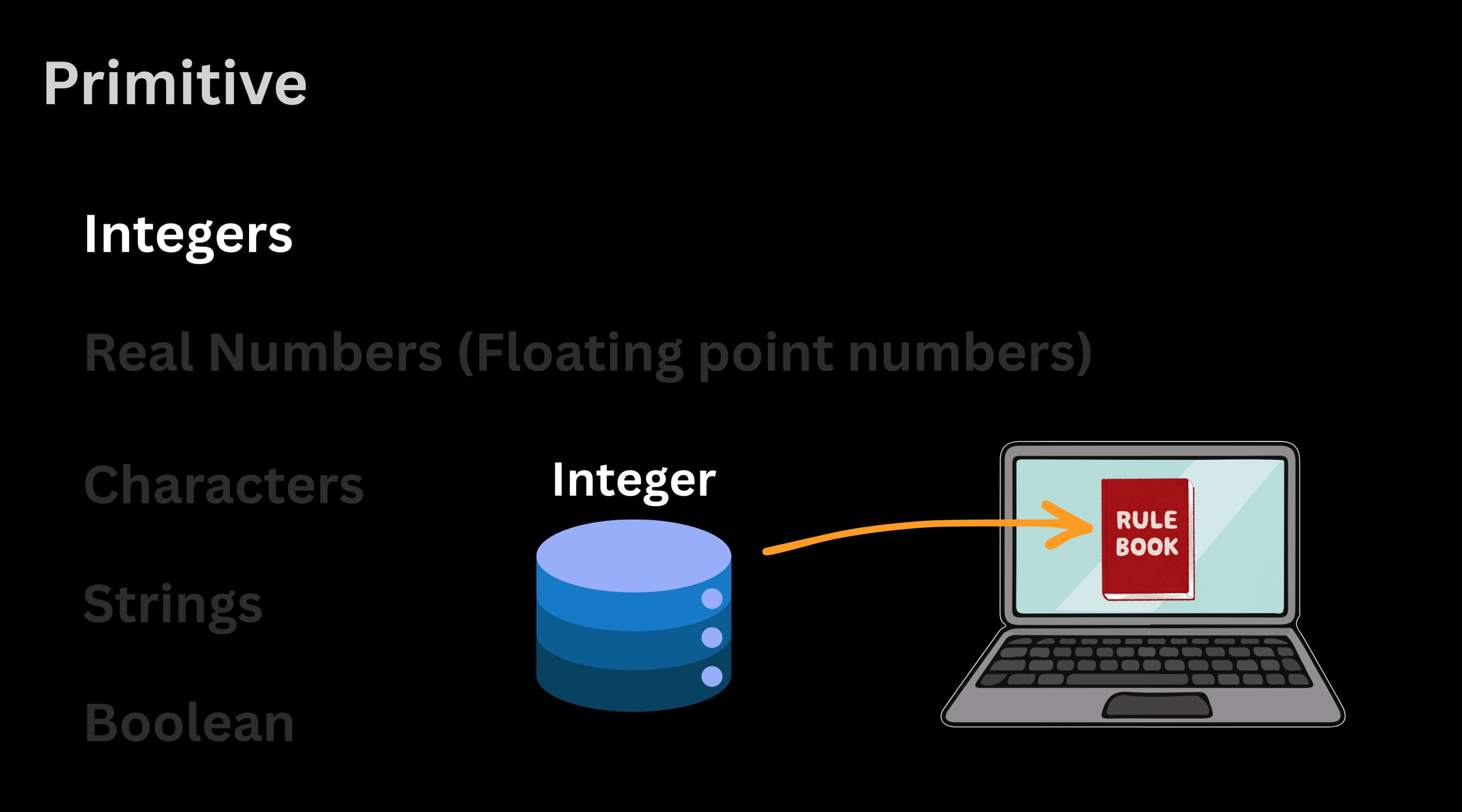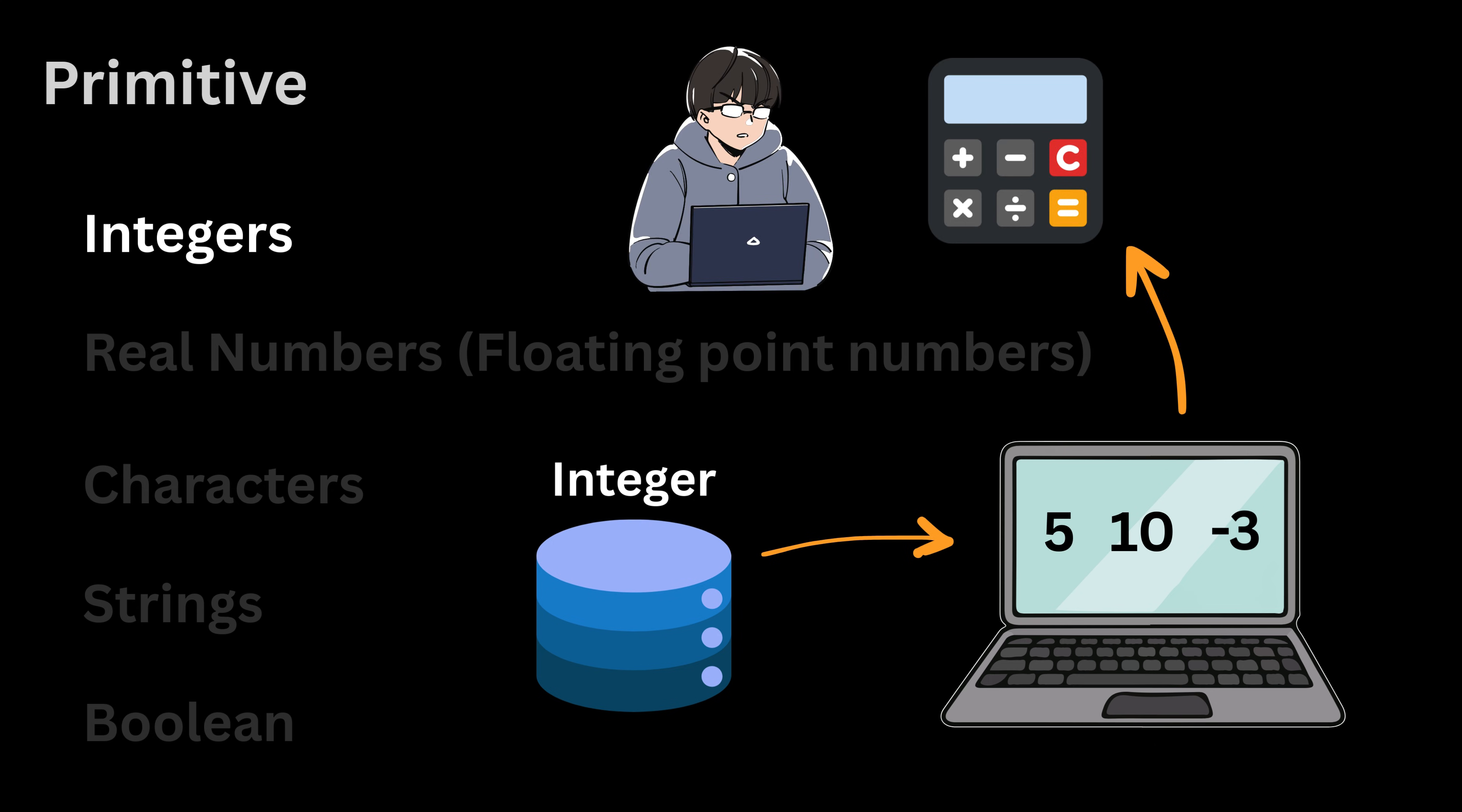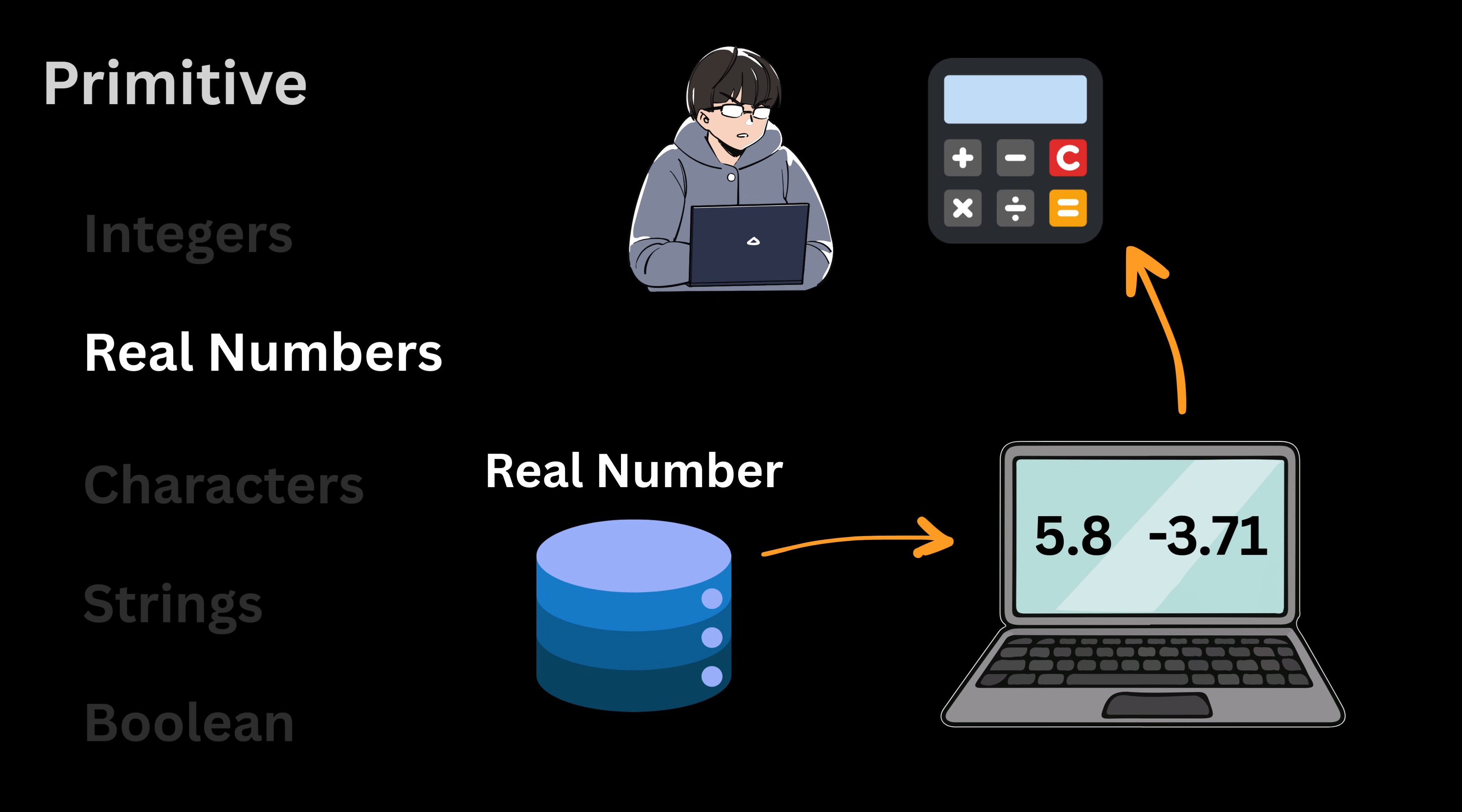Suppose we store an integer. The computer knows it should keep only integer values like 5, 10, or minus 3, and allow operations like addition, subtraction, multiplication, and division. If we store a real number or floating point number, the computer knows it must support decimal values and handle operations that work with fractions.